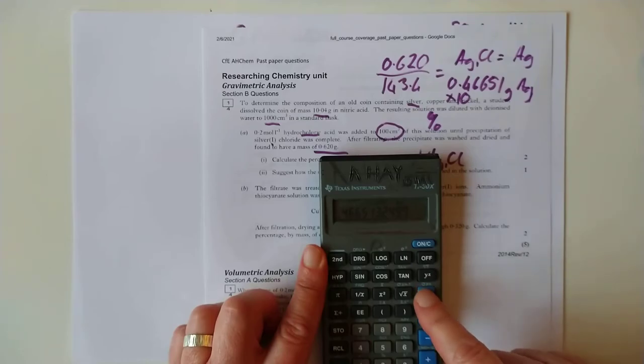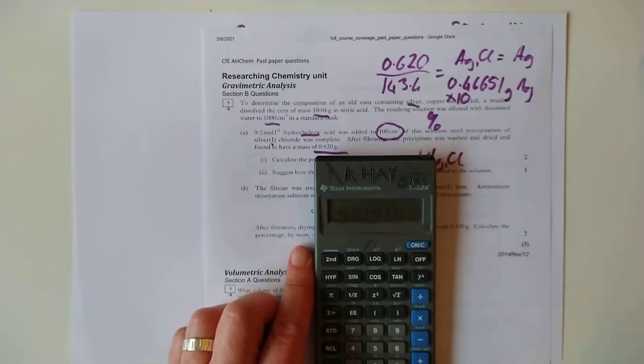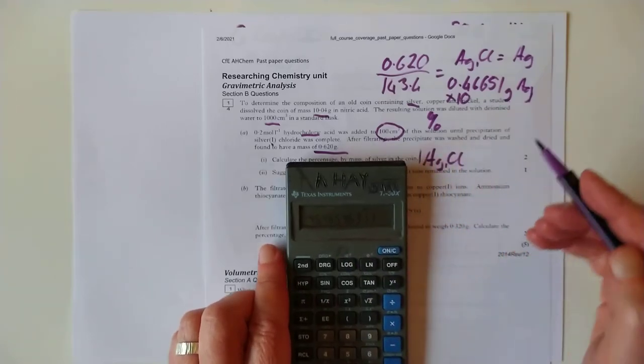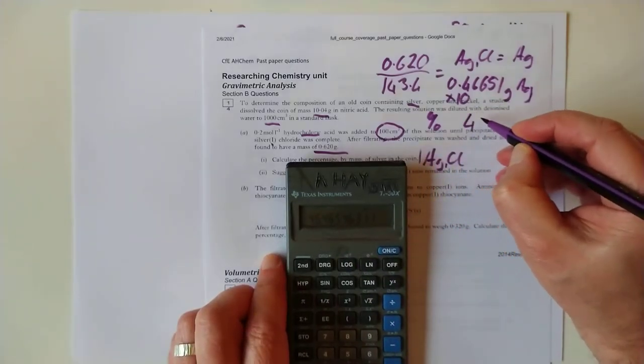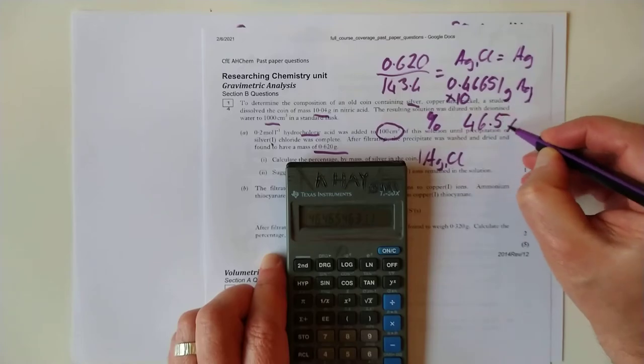Excuse me. Sorry about that. Sausage fingers there. Had to go back and do the calculation again. 4.665 divided by 10.04 gives us that. Turn it into percentage. And we have got 46.5.